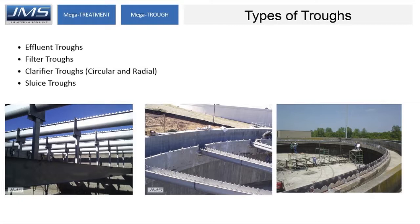The typical types of trawls we run into are effluent trawls, filter trawls, clarifier trawls, and sluice trawls. These are available in stainless steel or aluminum. Here are a few pictures showing some effluent trawls, radial clarifier trawls, and circular clarifier trawls.